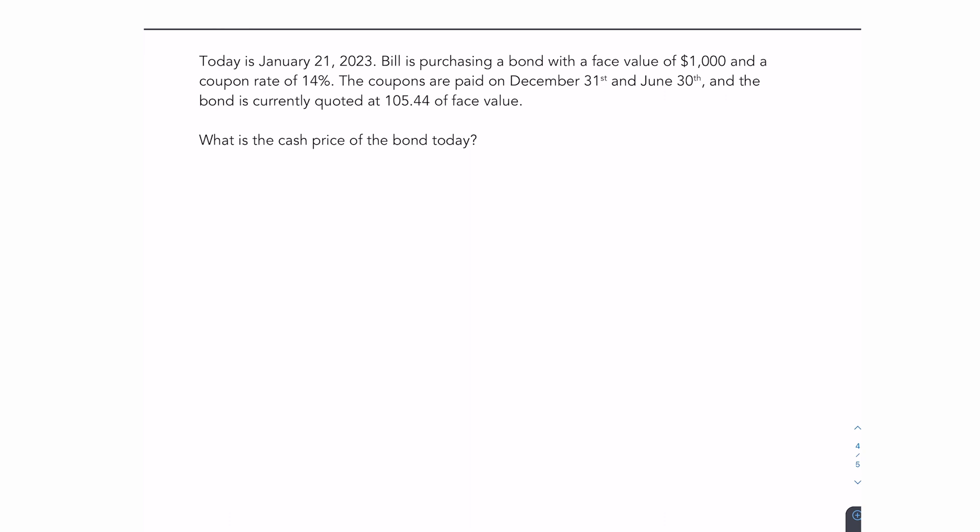In question number four, we've asked you to find the cash price of the bond. Now, in order to do this, we first need to find the accrued interest. So it says today is January 1st, 2023. Bill is purchasing a bond with a face value of $1,000 and a coupon rate of 14%. The coupons are paid on December 31st and June 30th. The bond is currently quoted at 105.44.